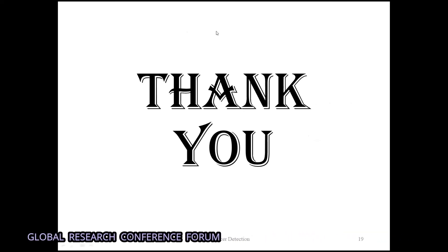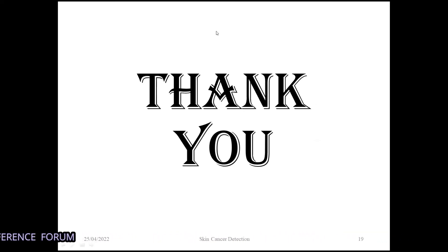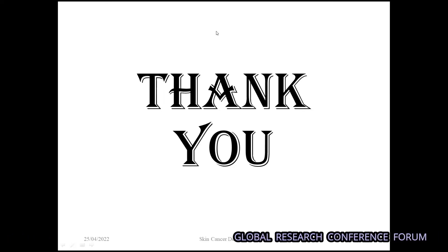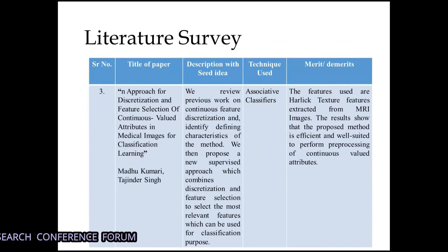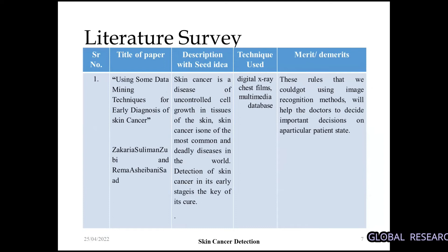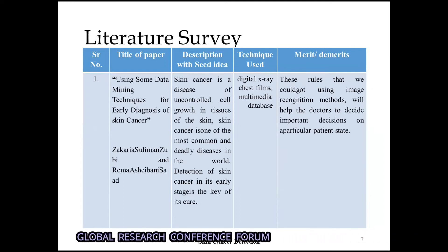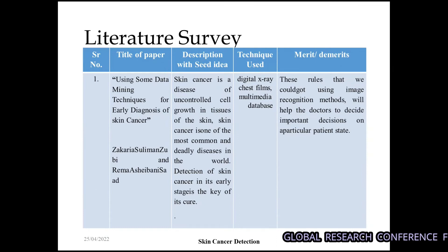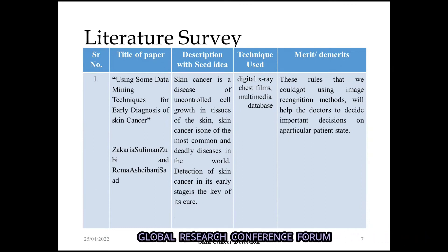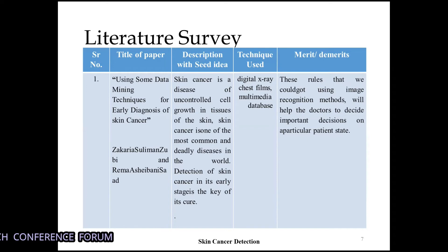Any questions from the panel? The reviewer asked: what is the title of your project? The presenter responded: skin cancer detection. The reviewer then asked: what process are you using to detect? The presenter answered: using image processing and CNN model. The reviewer noted that image processing and CNN is a very broad area and that many algorithms are involved in image processing, asking whether those had been followed, as they were not mentioned.